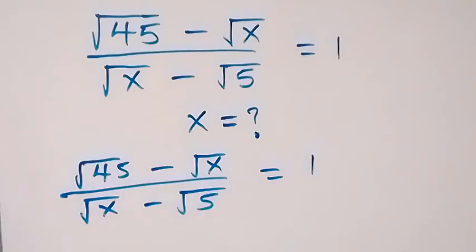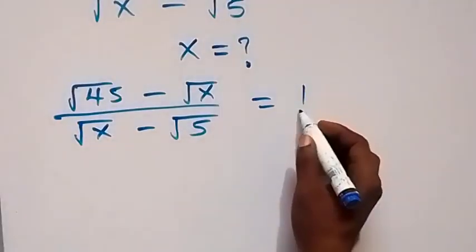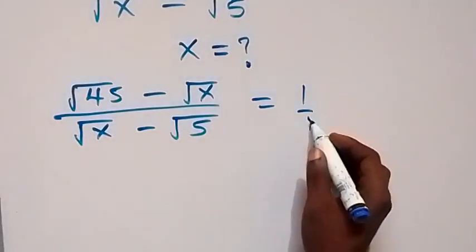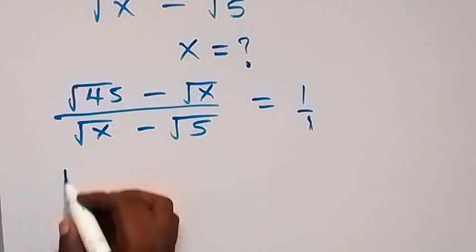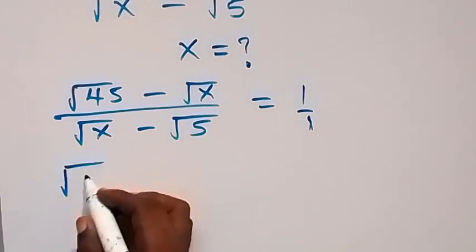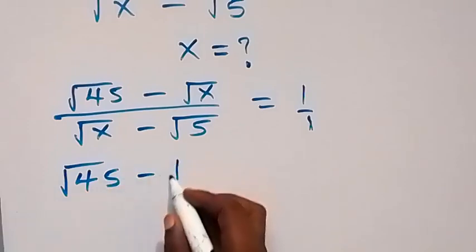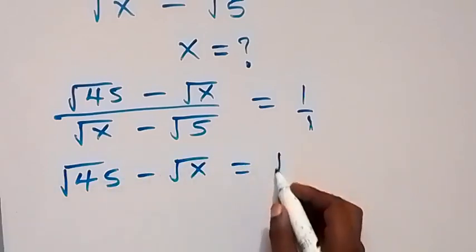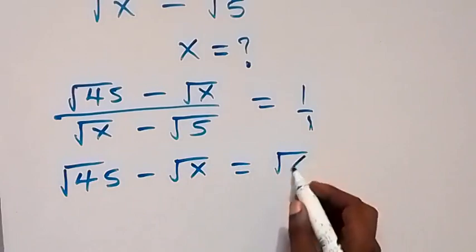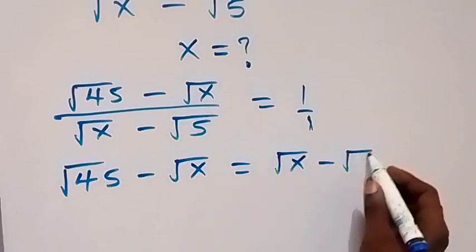This is the same as over 1. When we cross multiply, we have root 45 minus root x equals root x minus root 5.